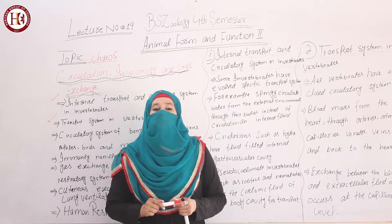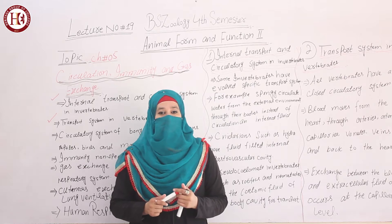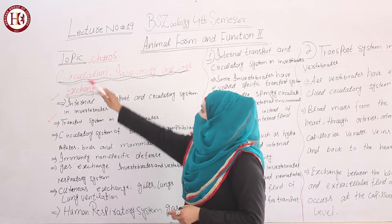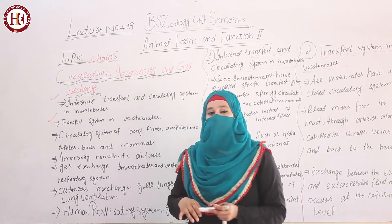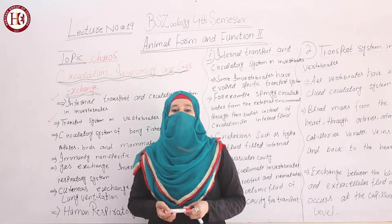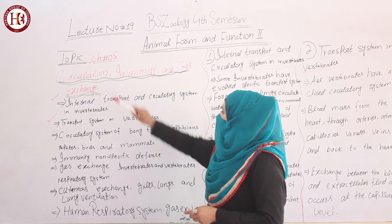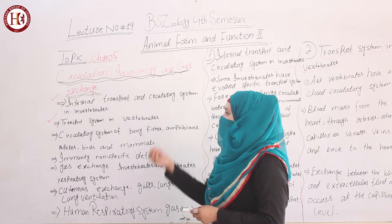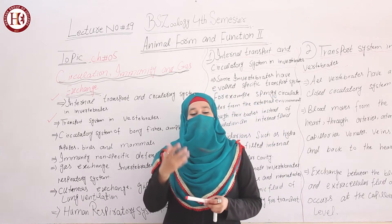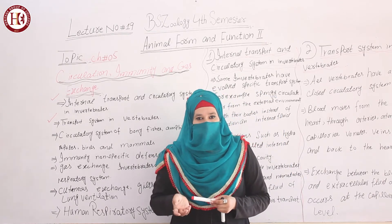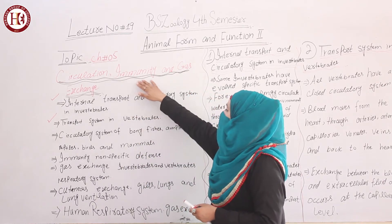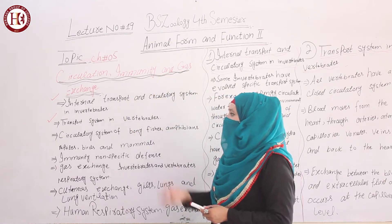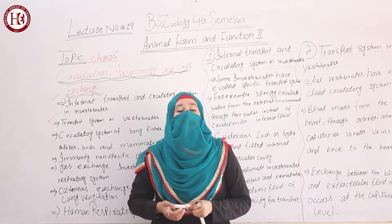Assalamu alaikum class. Today, Sajid Arsheet with BA Zoology, Semester subject Animal Form and Function 2. Our lecture number 19 topic — we start the next chapter, which is the last chapter of the subject: Animal Form and Function 2 — Circulation, Immunity and Gas Exchange. This chapter covers circulation in vertebrates and invertebrates, whether circulatory systems are closed or open, how immunity works, and how gaseous exchange takes place within the body and their environment.